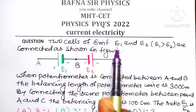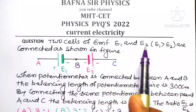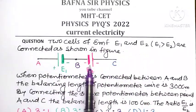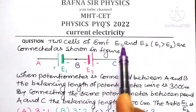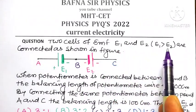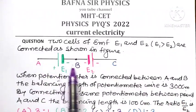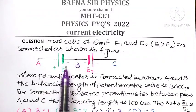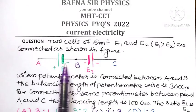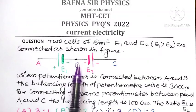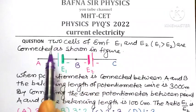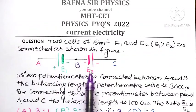We are given two cells of EMF E1 and E2 such that E1 is greater than E2, and they are connected in this manner. Here two cells are connected in such a way that their negative terminals are connected together, meaning the net EMF of this combination is the difference of the EMF of the two cells.